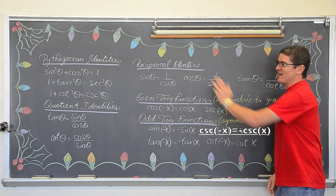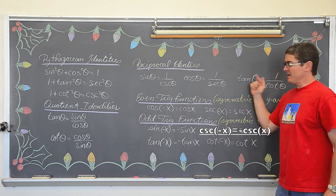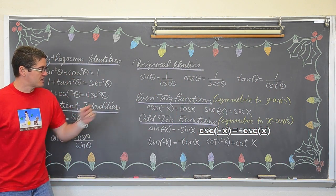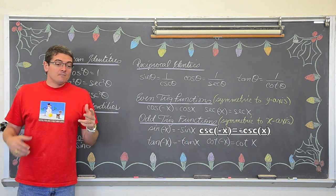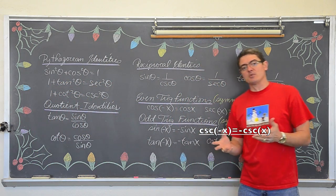We are going to use Pythagorean Identities, Quotient Identities, our Reciprocal Identities, our values or facts about even and odd functions, and that is it at this point to start working and learning how to do Trigonometry Proofs.